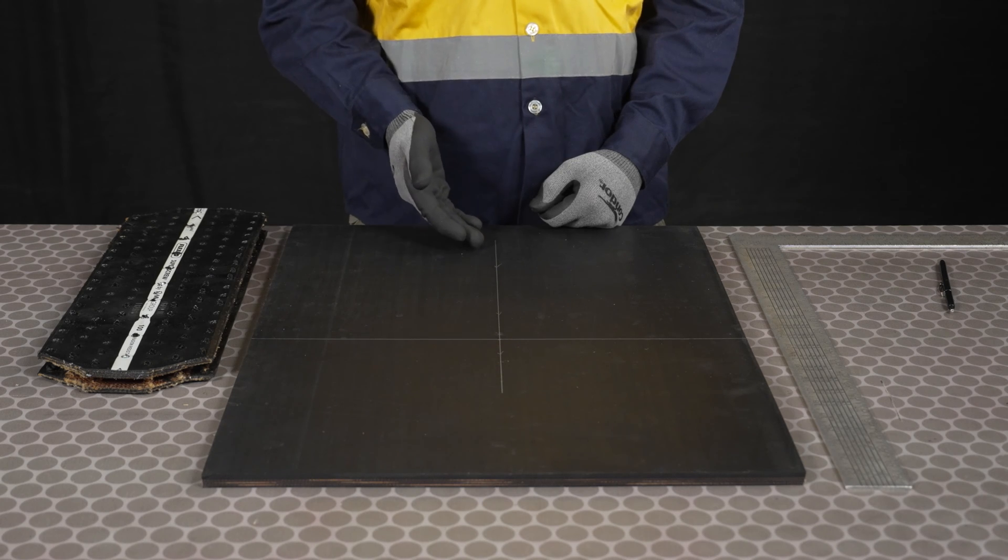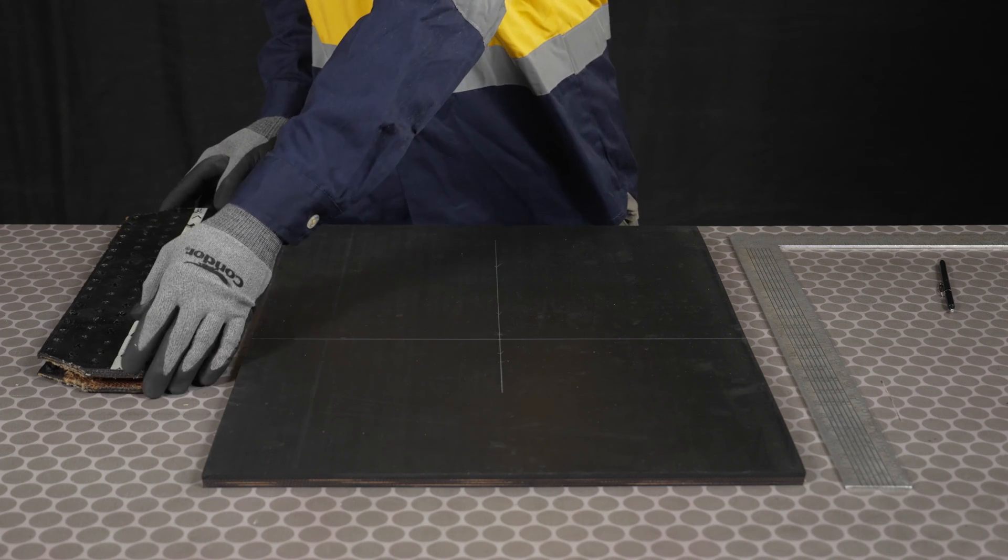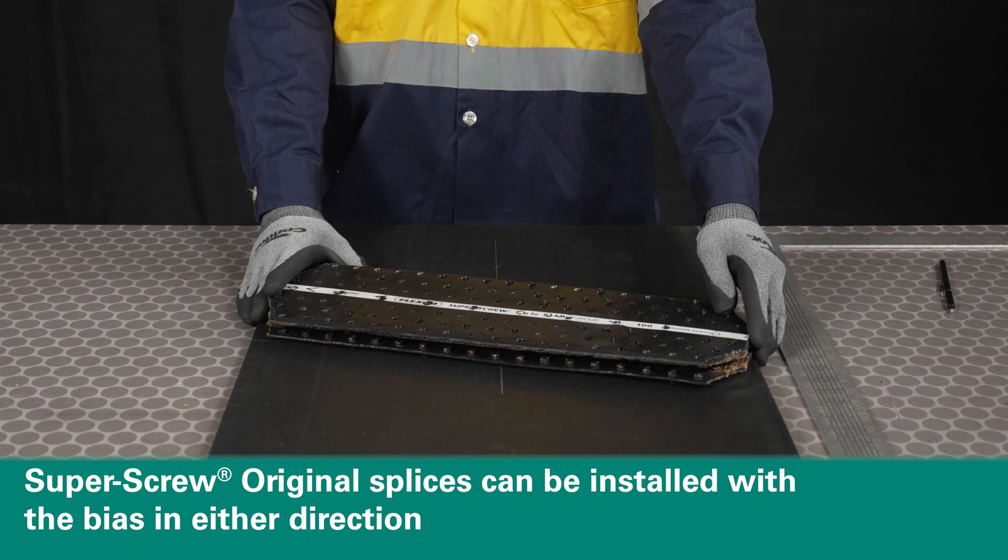Square the belt using the centerline method and mark a perpendicular line across the belt. Lay the splice face up on the belt to visualize the bias.